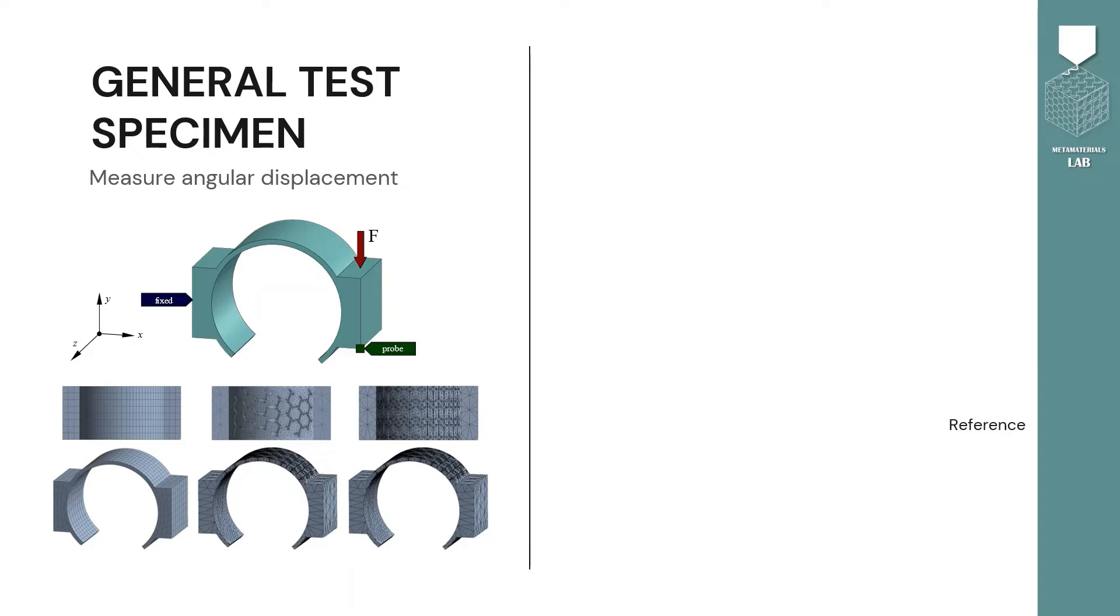To measure the angular displacement of the joints, I fixed one of the rigid sections and applied a force at the other rigid section. Simulations were made in ANSYS workbench.